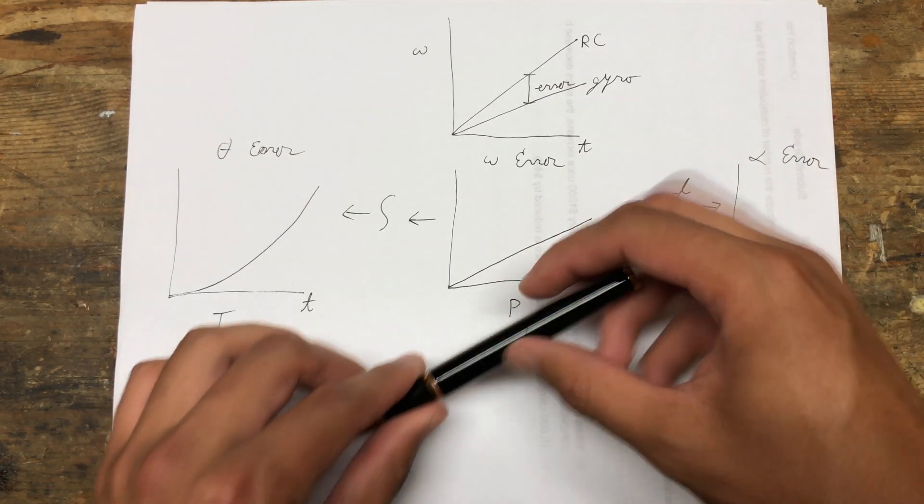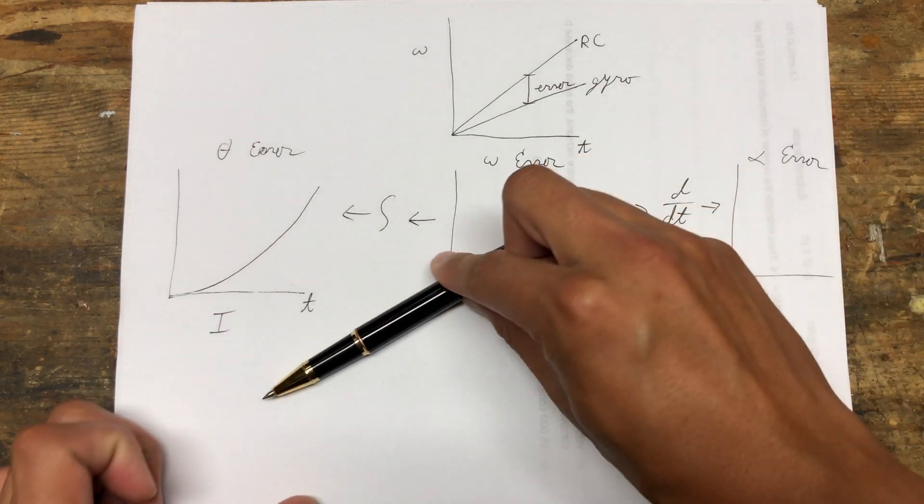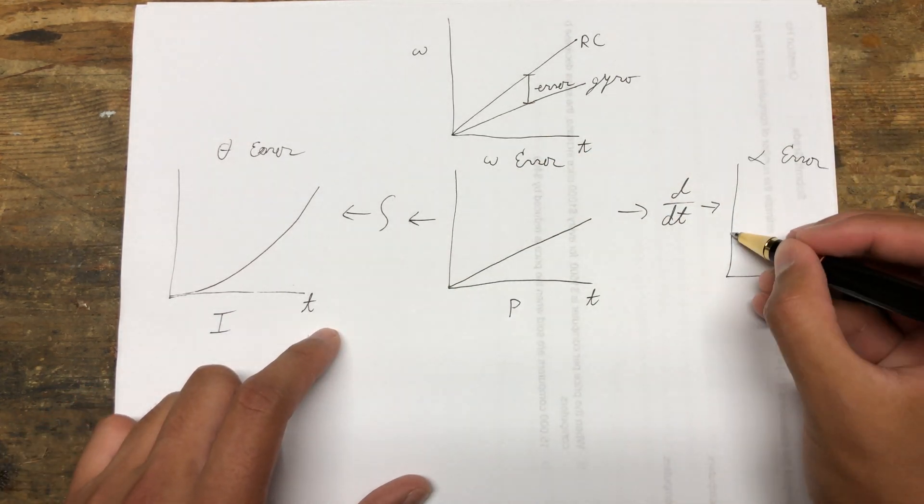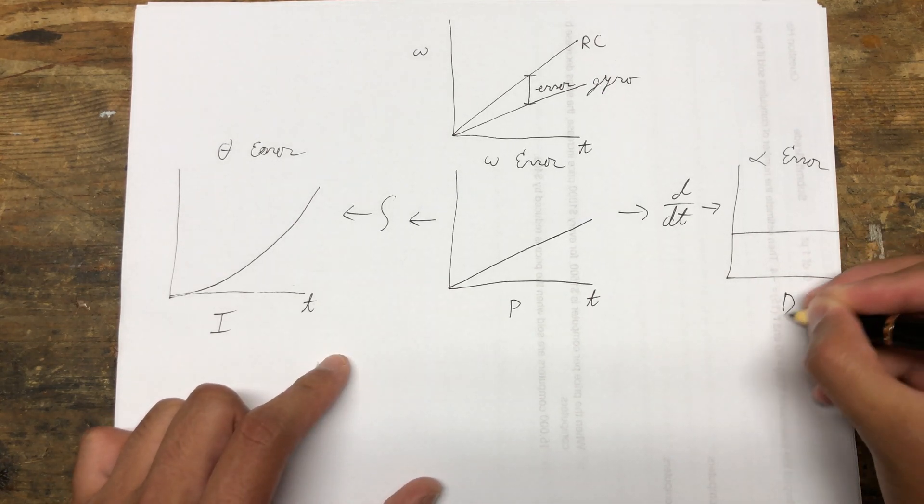In this case, the slope for any point in time on this particular graph is just always a constant positive value. For this case, that's the error, and this is what the D-term reacts to.